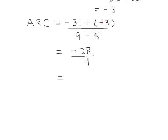Finally, -28 divided by 4 will give us -7. So our average rate of change from x sub 1, 5, to x sub 2, 9, for this problem -7x plus 32 is -7.